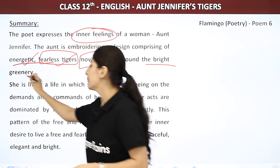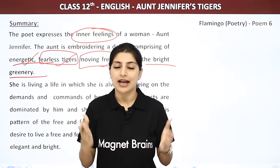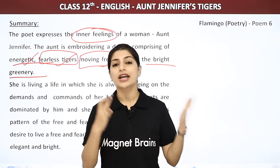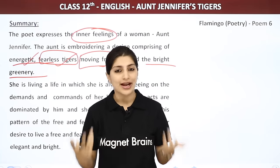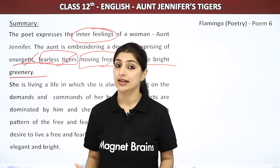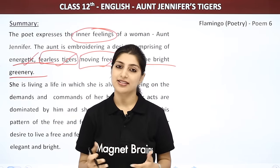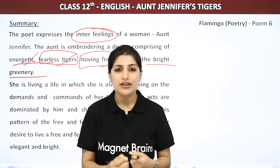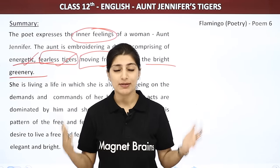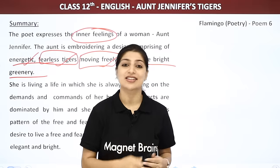Tiger bright greenery mein, haray bharay forest mein idhar-udhar freely ghoom raha hai aur apni zindagi ji raha hai — jo ki aunt ki zindagi ke bilkul opposite hai. Aunt ki koi identity nahi, koi respect nahi, specially uncle bahut dominating hain. Woh apne ghar mein khuli hawa mein saans bhi nahi le sakti. Aunt Jennifer apni embroidery mein tiger bana rahi hain aur tiger bana ke woh apni feelings express kar rahi hain — ki jaisa tiger fearless aur energetic hai, woh bhi waisi banna chahti hain, khuli hawa mein saans lena chahti hain, unhe ghar mein acceptance, respect aur love chahiye.